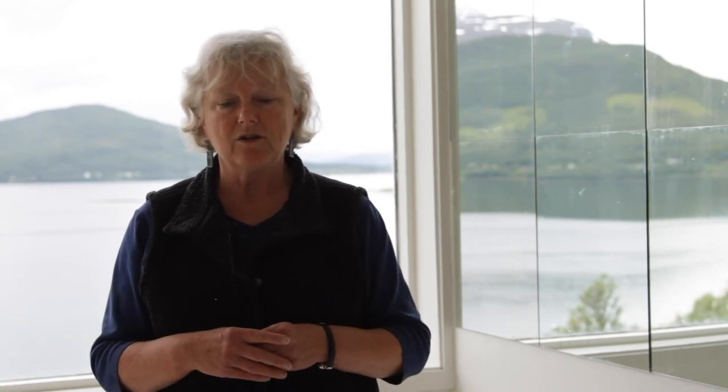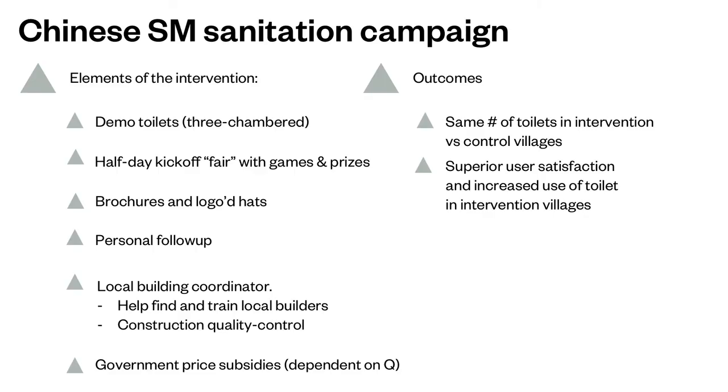That impacted how they designed the introduction of the toilets to the community. They provided examples since it was new to the area, made the kickoff event fun, and used communication strategies like brochures to share information. To overcome distrust of outsiders, they engaged local people to interact with community members and to be the ones doing the building. They tested this approach: some villages received the full intervention while others had the toilets introduced in the usual way.